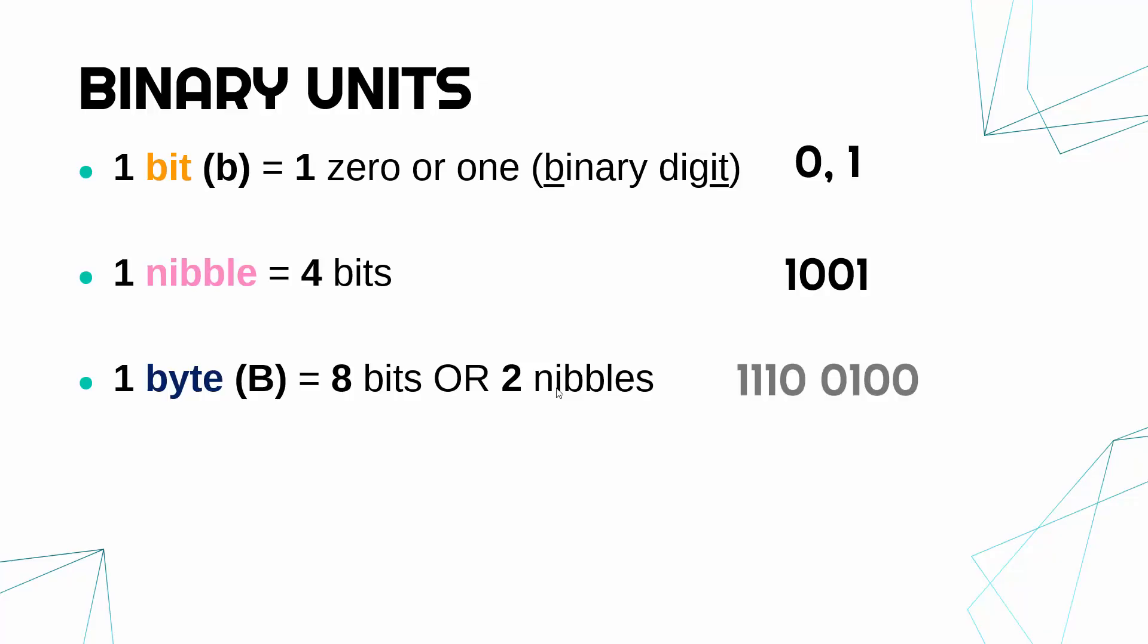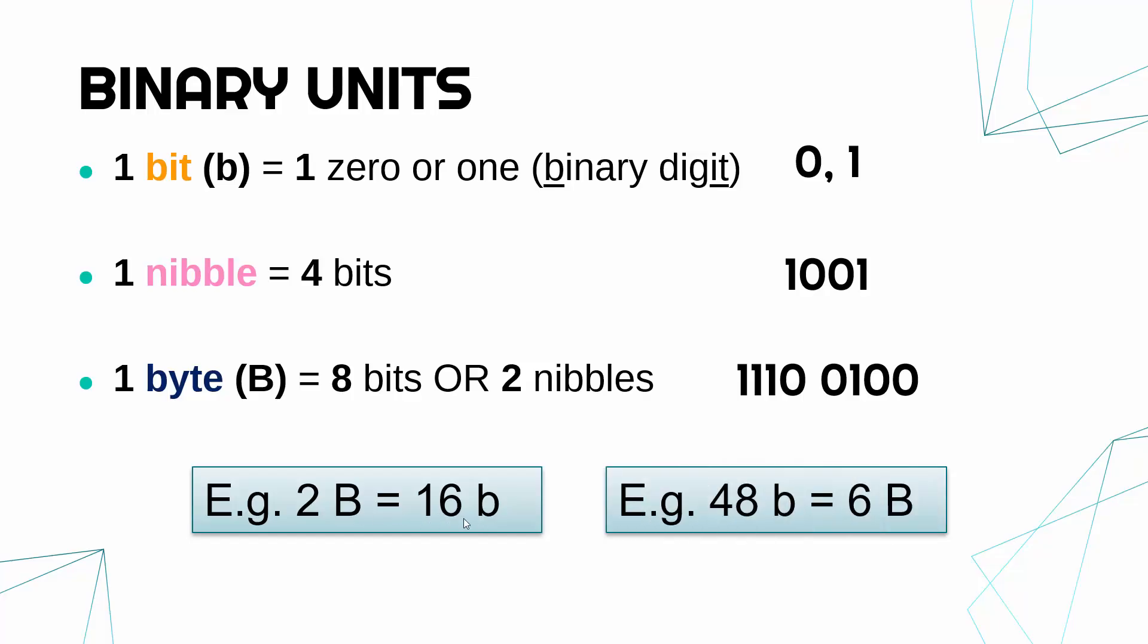Now just in terms of conversions you might see, for example, two bytes (you know it's a byte because it's got a capital B) is the same as 16 bits—2 times 8 is 16. And going the other way around, if you were asked to convert 48 bits to bytes, you would just need to divide by 8, which gives you 6 bytes. So these are quite straightforward.